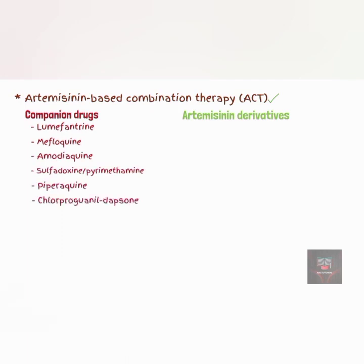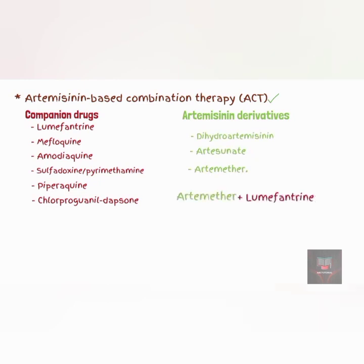Artemisinin derivatives include dihydroartemisinin, artesunate, and artemether. An example of ACT is the combination of artemether and lumefantrine. Another example would be the combination of artesunate and amodiaquine.